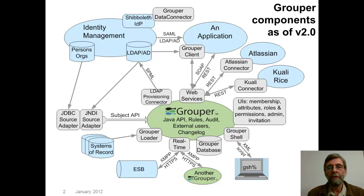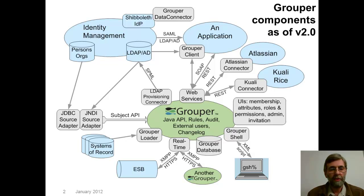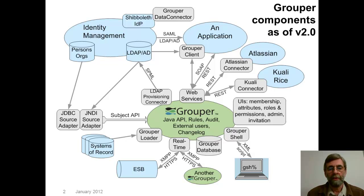First of all, you notice that there's some blue things around the outside. Identity management, it says, up there in the top left corner. In the upper right, there's an application, some other kinds of applications. On the bottom left, we see systems of record and maybe even an enterprise service bus. These are the technologies and systems and applications that an organization is already running that they might wish to integrate with Grouper.